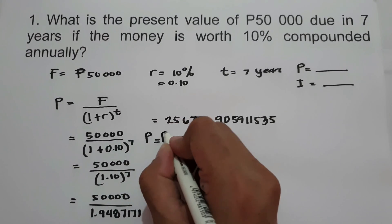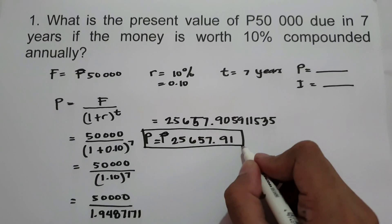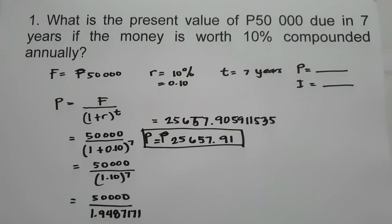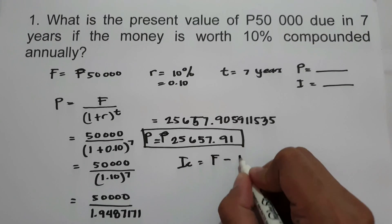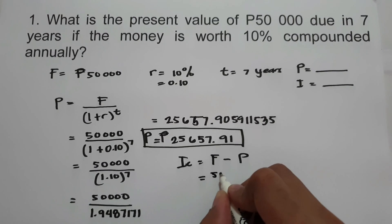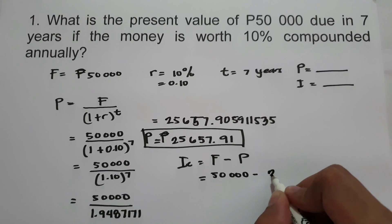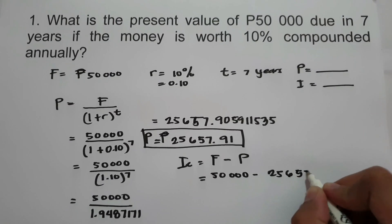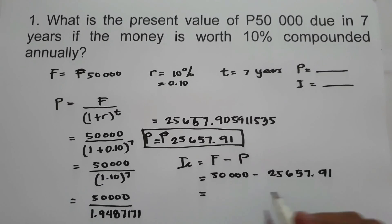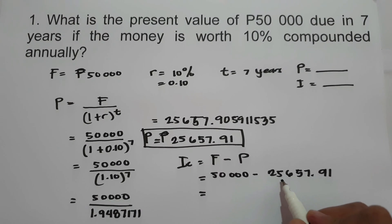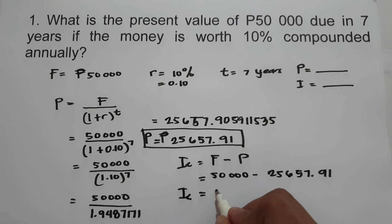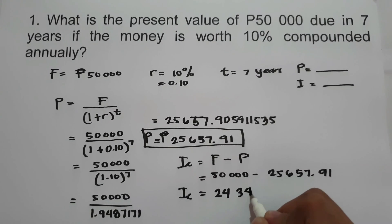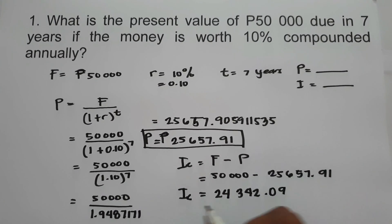So 25,657.91 will be our principal. Now, what about the interest? To find the interest, that is future value minus principal. Our future value is 50,000 minus the principal, which is 25,657.91. Subtracting, 50,000 minus 25,657.91, our interest is 24,342.09. So this will be our answer.